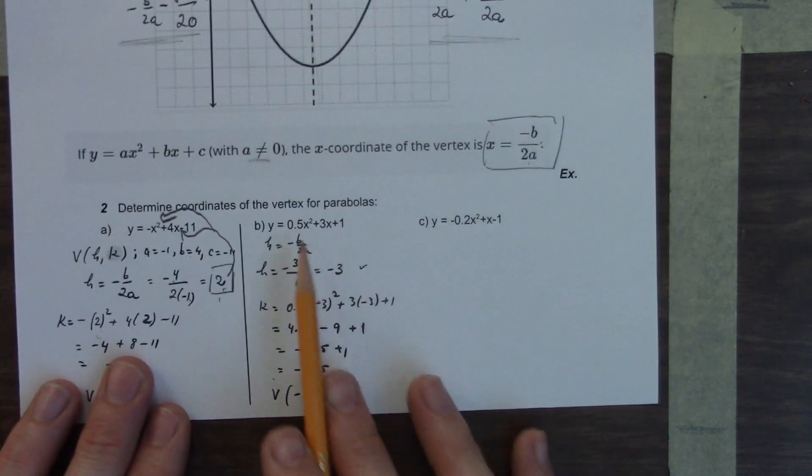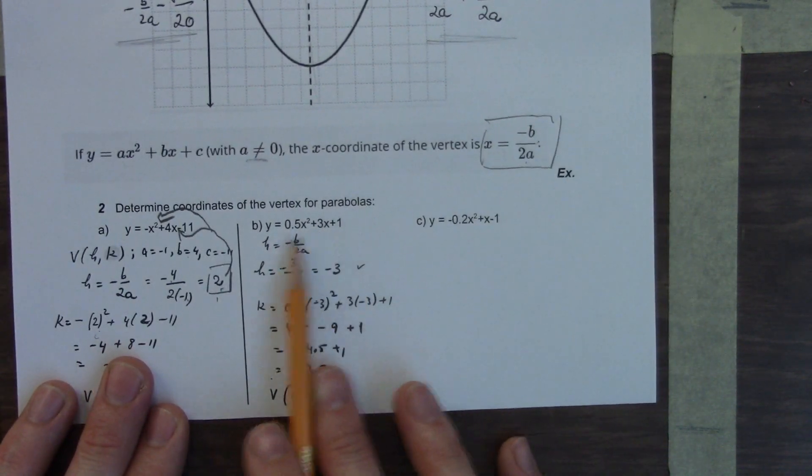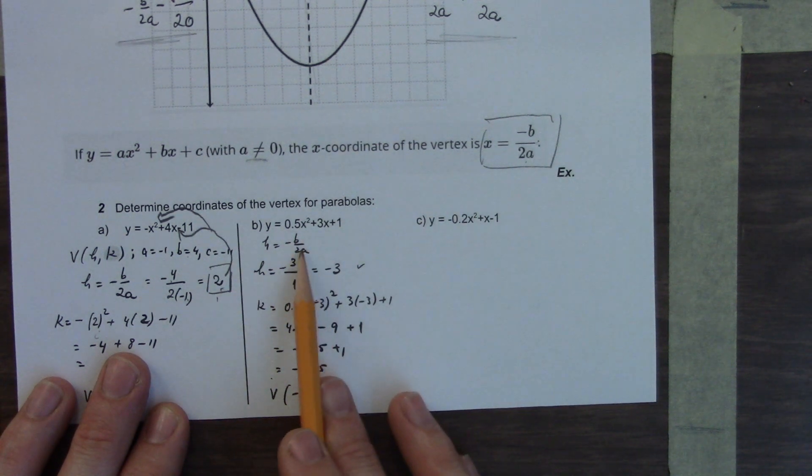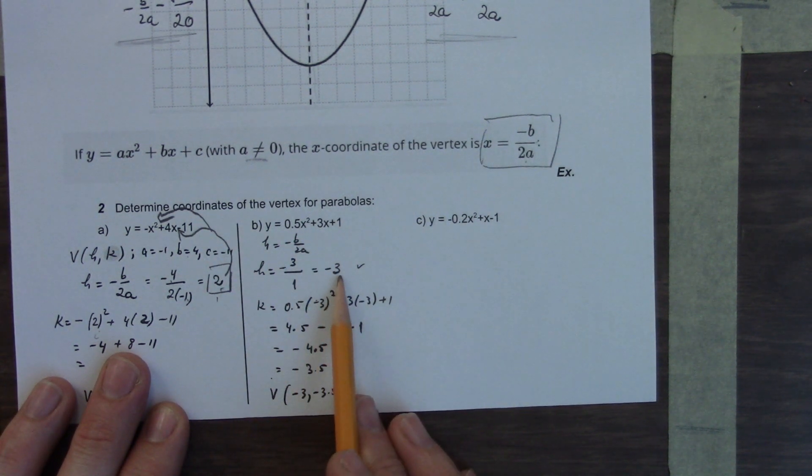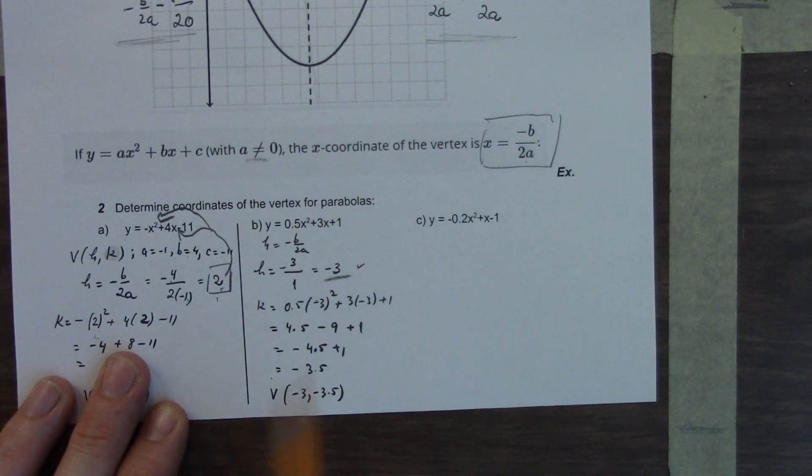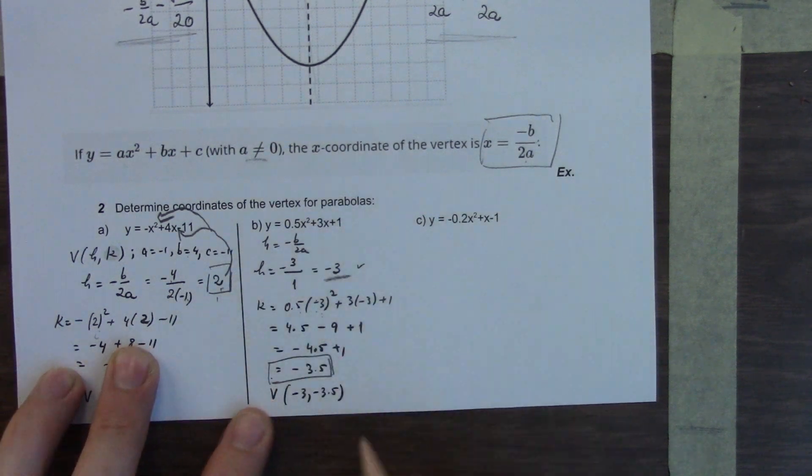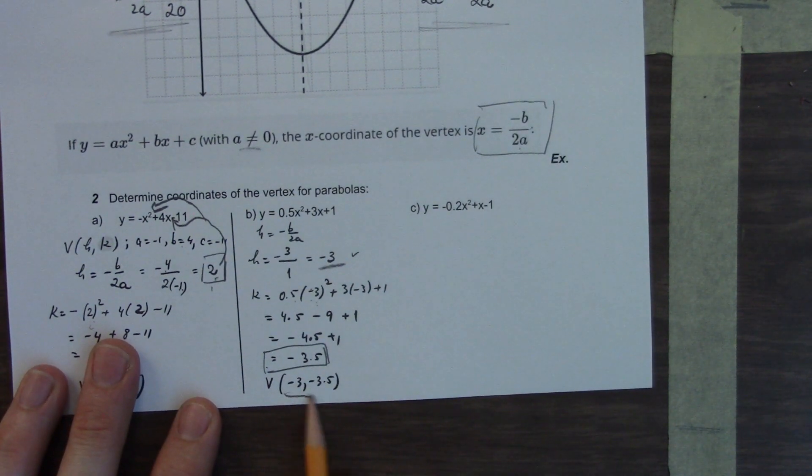Doing the same thing over here. This is in standard form. Even though our a value is a fraction, it's still in standard form. We have our a, b values. We can find out the x value of our vertex. We just plug it into minus b over 2a. We get 0.5 times negative 3 squared. We work that out to get our y value of negative 3.5. That's our vertex.